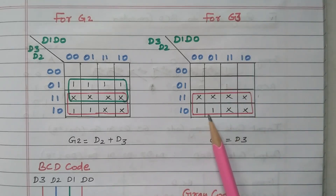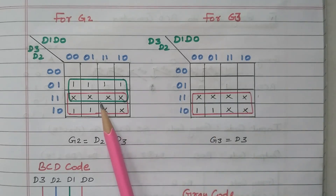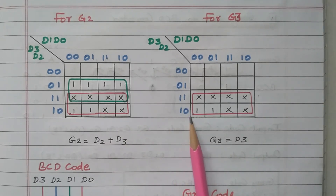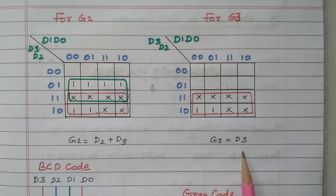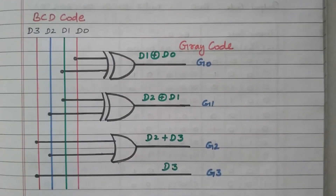For G3, there are only 2 ones and 6 don't care conditions. Grouping all 8 cells together, referring the corresponding third and fourth rows — the first digit D3 is commonly 1, and the second digit cancels out. So G3 = D3. We now have minimized Boolean expressions for G0, G1, G2, and G3. Now we will implement these Boolean expressions using logic gates.